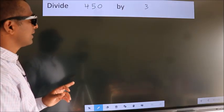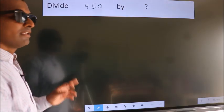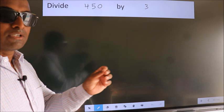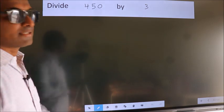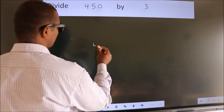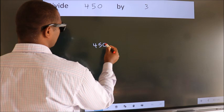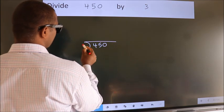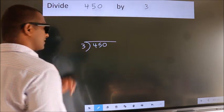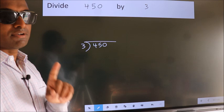Divide 450 by 3. To do this division, we should frame it in this way. 450 here, 3 here. This is your step 1.